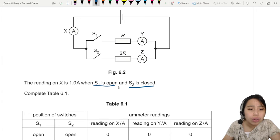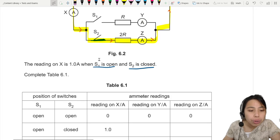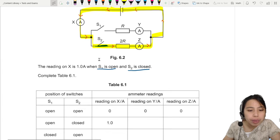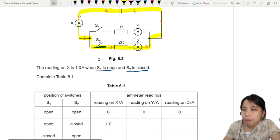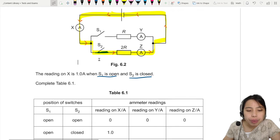So I'm going to get very confused. I'm going to draw it out. S1 is open. S2 is closed. So I need to close. So current will flow like this. I should just highlight it. This is the path of electric current.